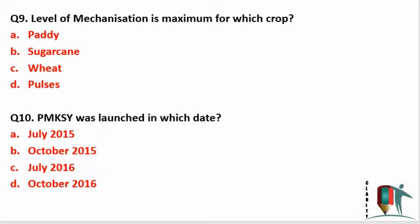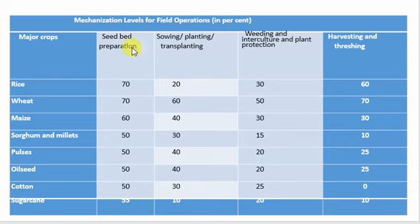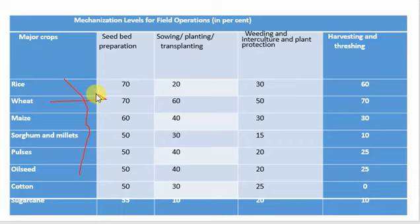The level of mechanization is maximum for which crop? The level of mechanization is maximum for wheat crop. Maximum mechanized operations are performed in the wheat crop, particularly at the sowing stage and seed bed preparation stage. PMKSY was launched in July 2015. Looking at the data across different crops — paddy has 70% mechanization for seed bed preparation, 20% for sowing, 30% for weeding, and 60% for harvesting — wheat remains the most mechanized crop. You should remember this trend from the Economic Survey.